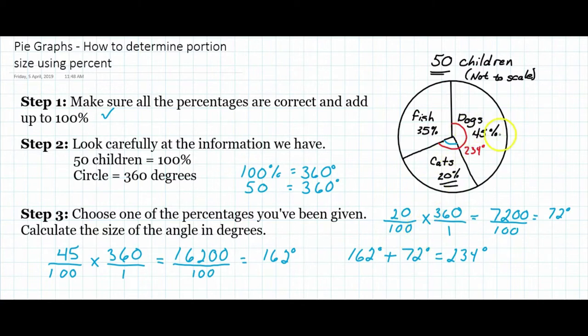We know that dogs is 162 degrees, so all we need to do is go 360 degrees subtract 234 degrees, which equals 126 degrees.